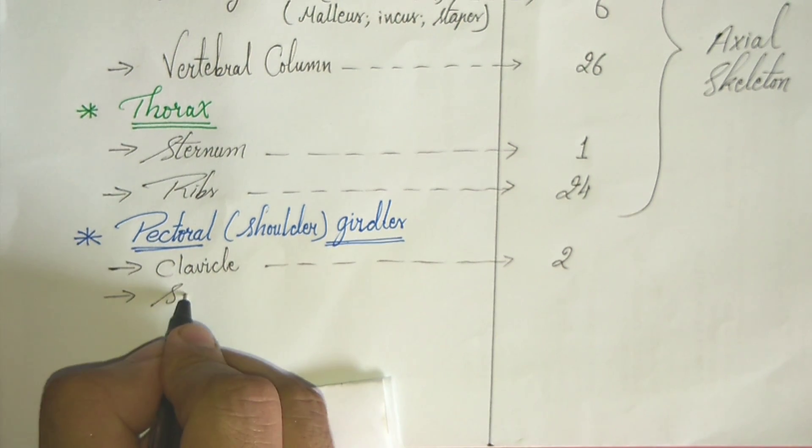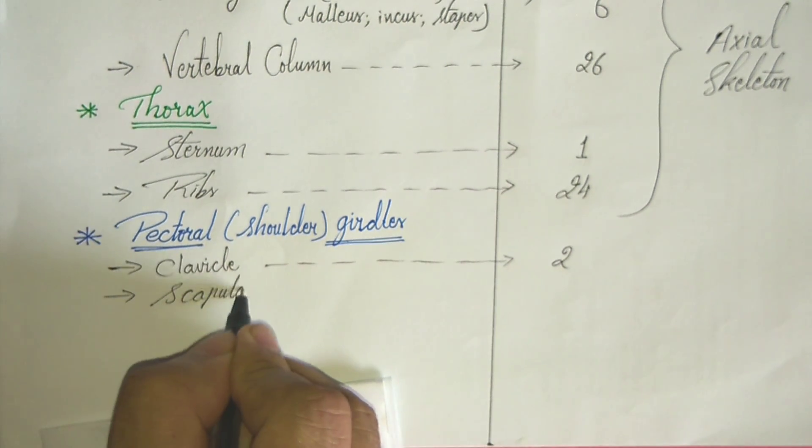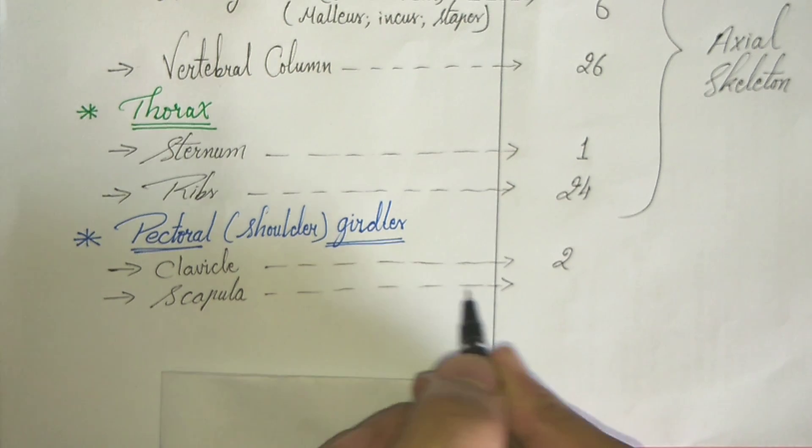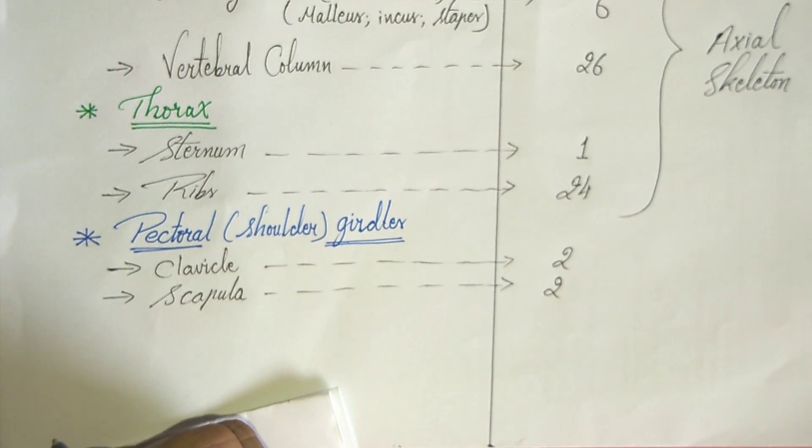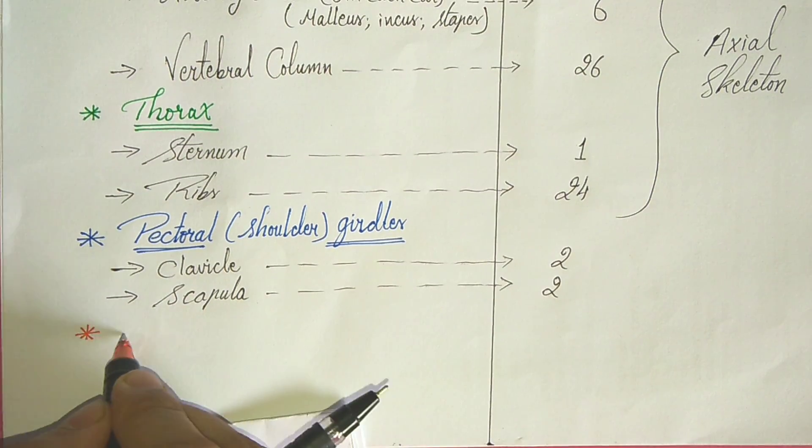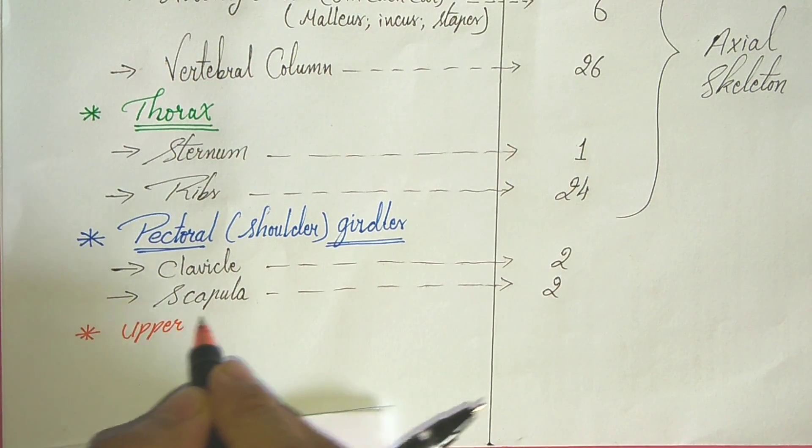Now in this pectoral girdle, the clavicle, two clavicle bones are present and scapula, two scapula bones are present. This clavicle and scapula are also the best example for the flat bones.